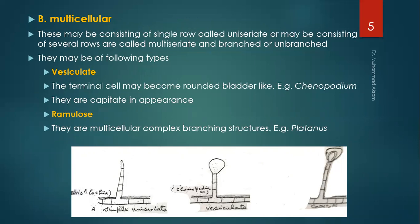Multicellular type of trichomes may consist of a single row called uniseriate, and may be branched or unbranched. They may be of two types: the vesiculate or ramulous. In the vesiculate type, the terminal cell may become rounded and bladder-like — for example, in Chenopodium, they are capitate in appearance. The ramulous type consists of multicellular complex branching structures, for example, in Platanus.